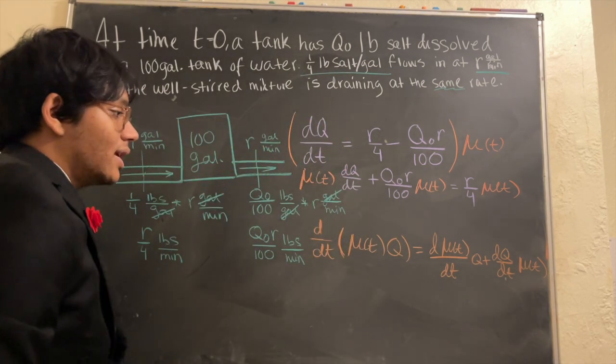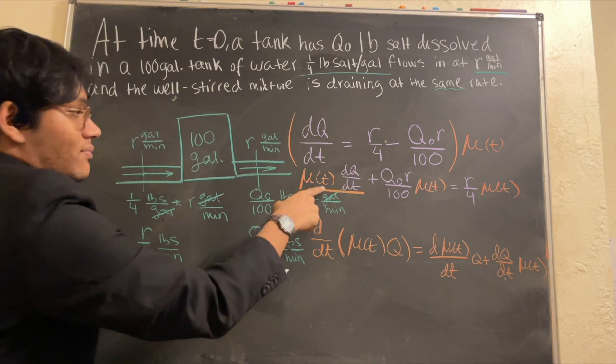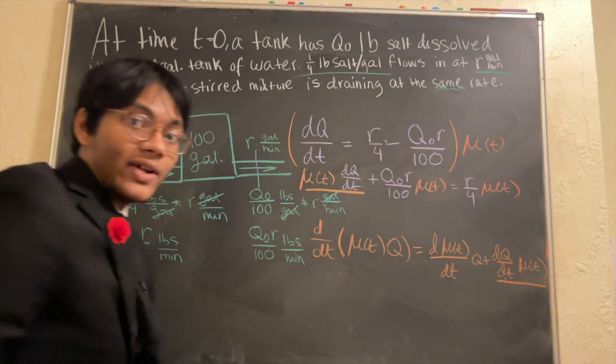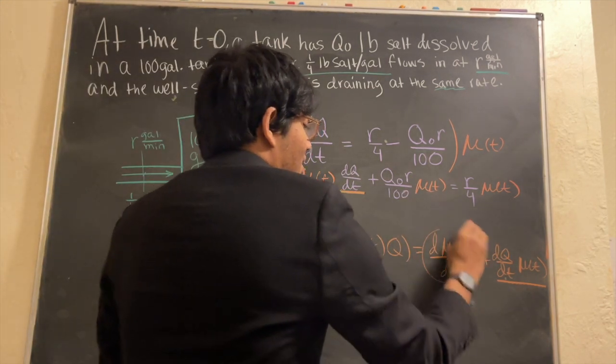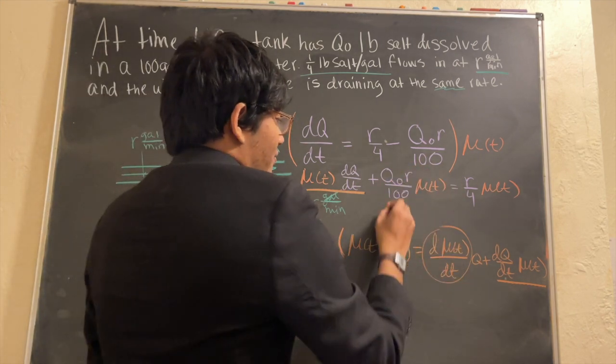And if you look at this, you should notice one of the terms is already the same. Mu of t times dq/dt looks a lot like this. In fact, they're identical. And so all we have to do is make sure that this guy here is the same as this over here.